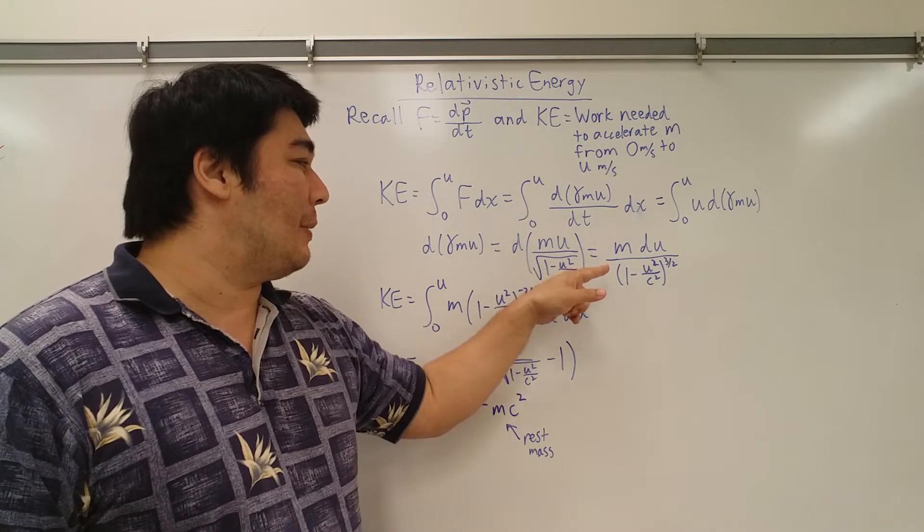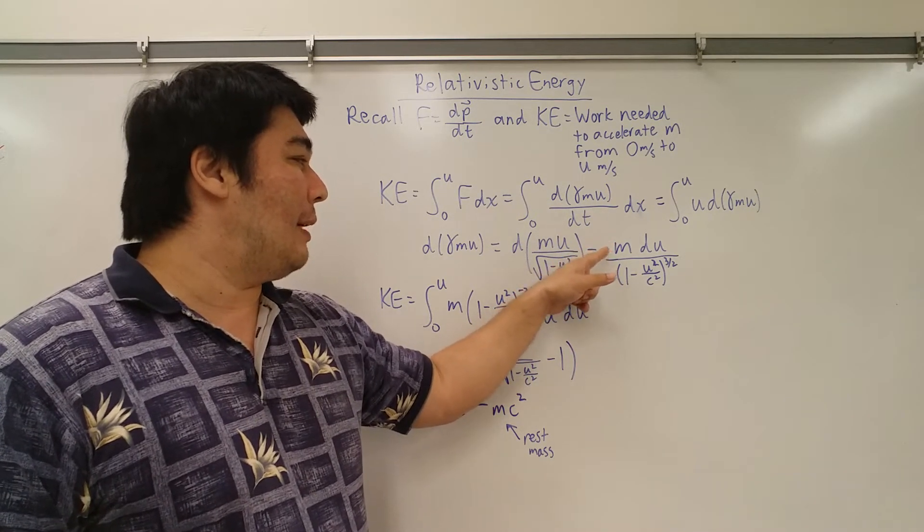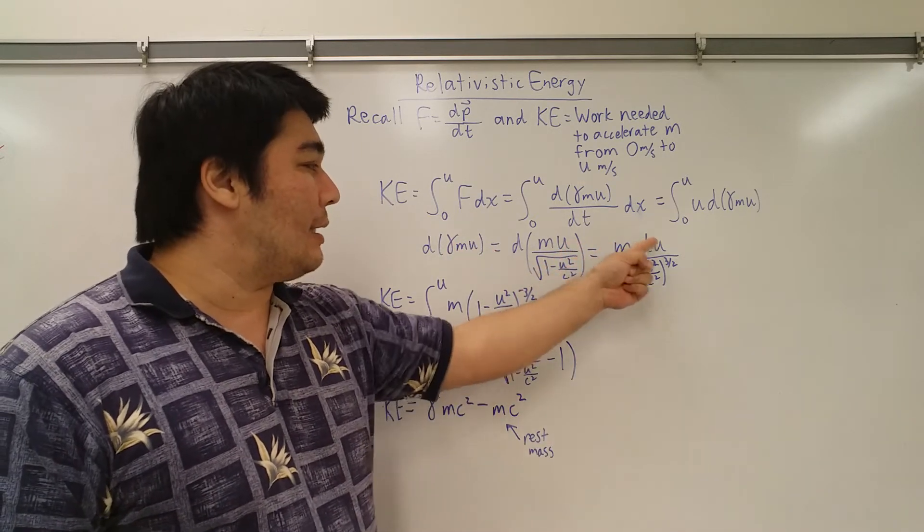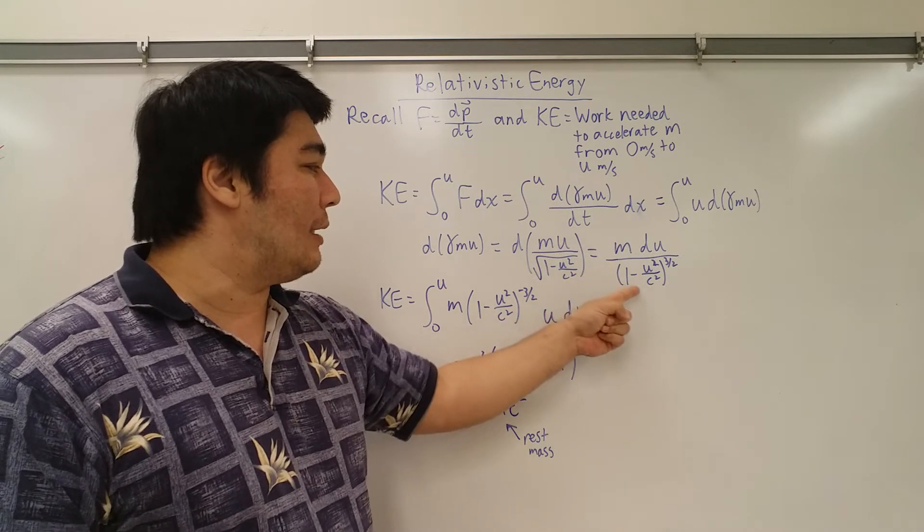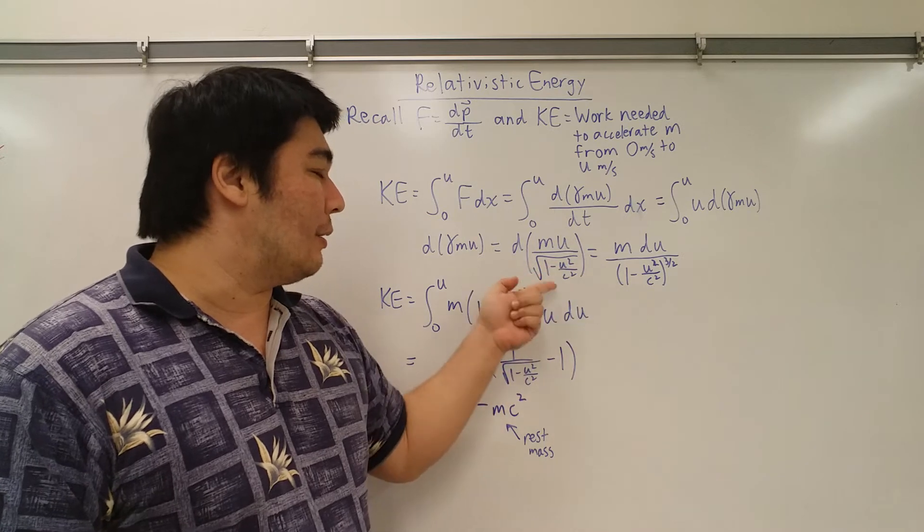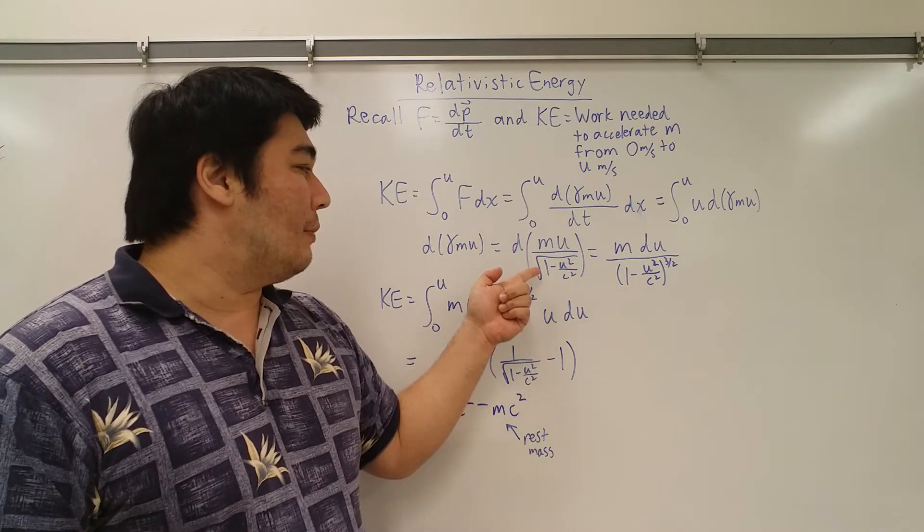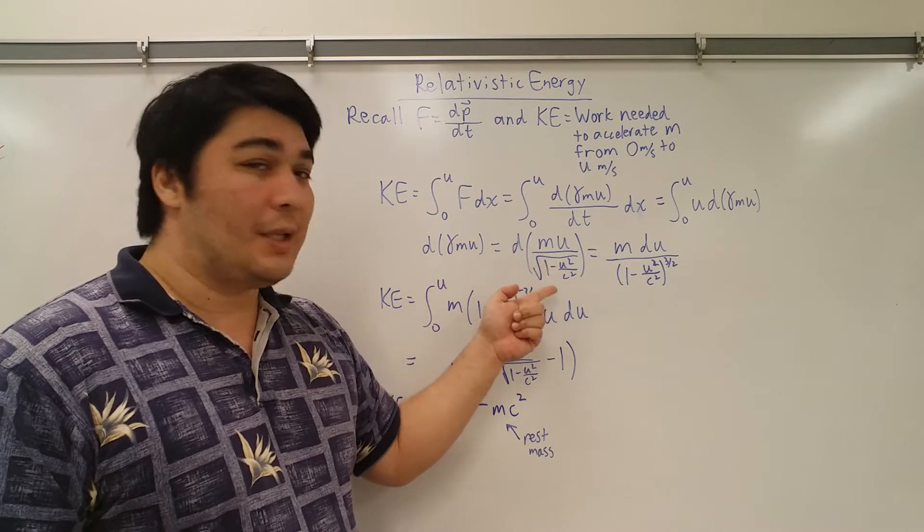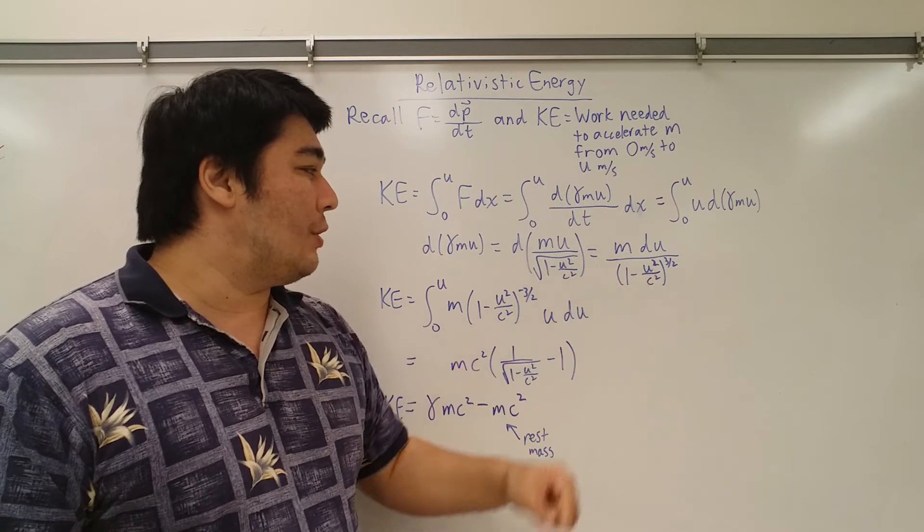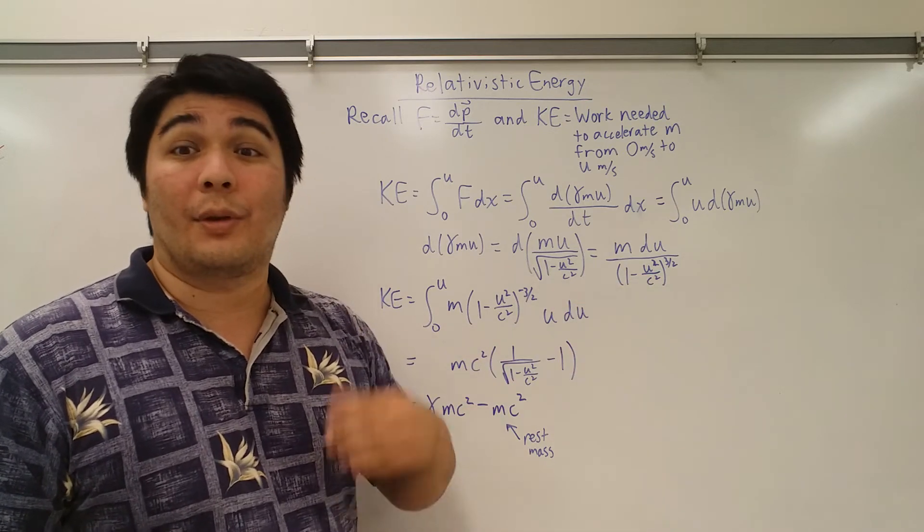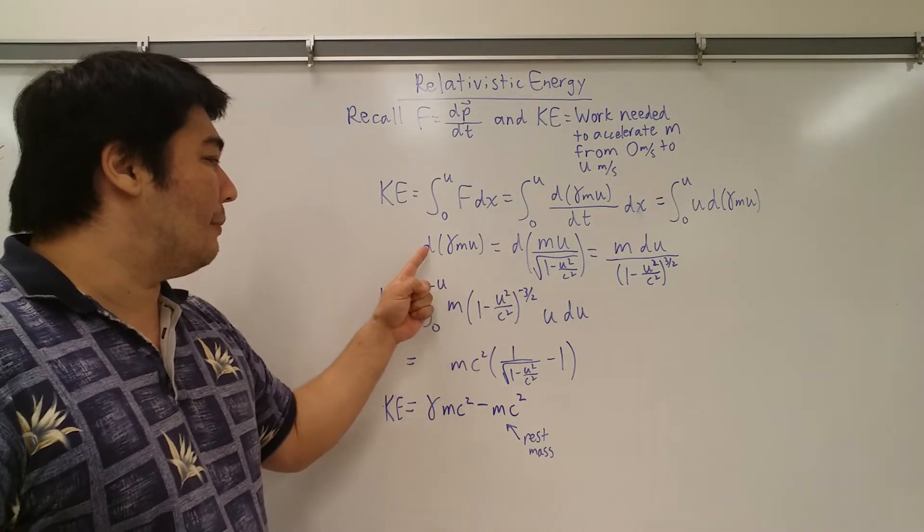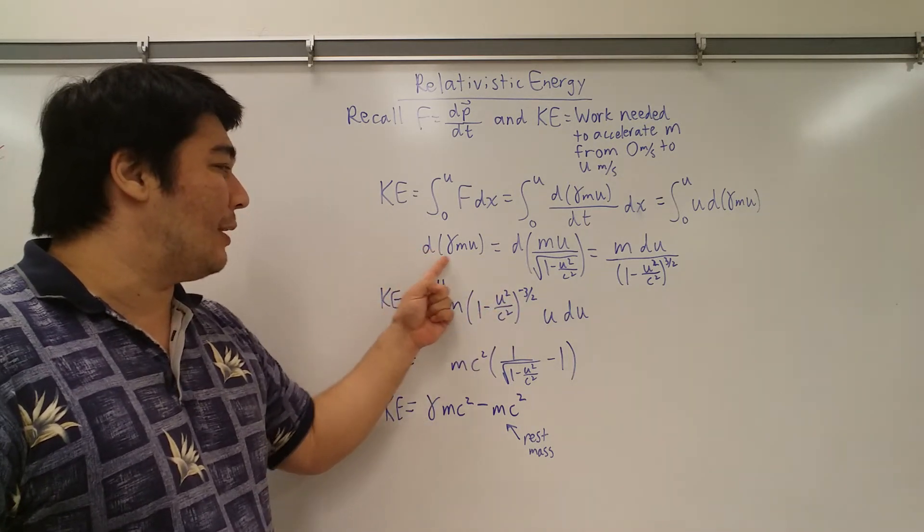So when I take the derivative of that, what I find is that that's going to become m, m gets factored out because that's a constant in this case. So then the du goes in here, you take the differential into the denominator, and you get the derivative of one minus u squared over c squared to the negative one half power is going to be one minus u squared over c squared to the negative three over two power. So now that I've got that, I can change my differential of gamma mu.